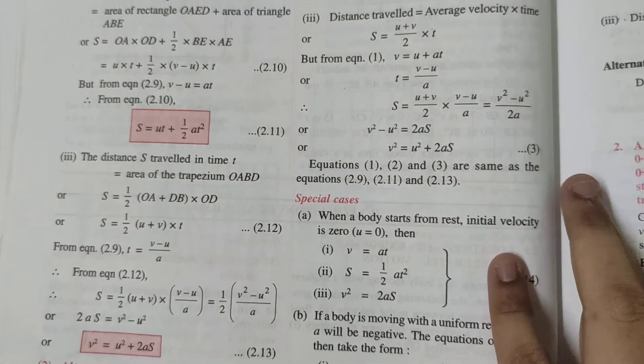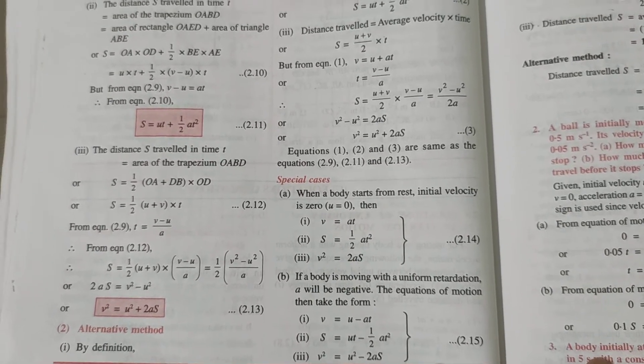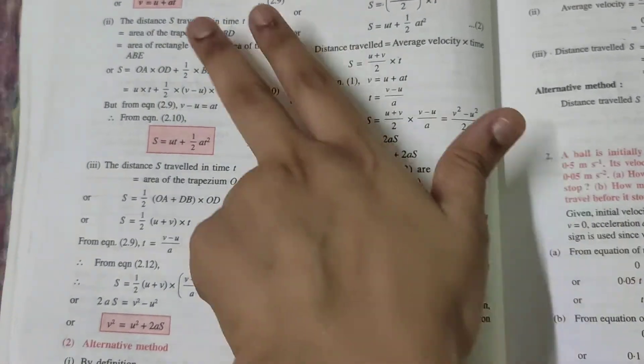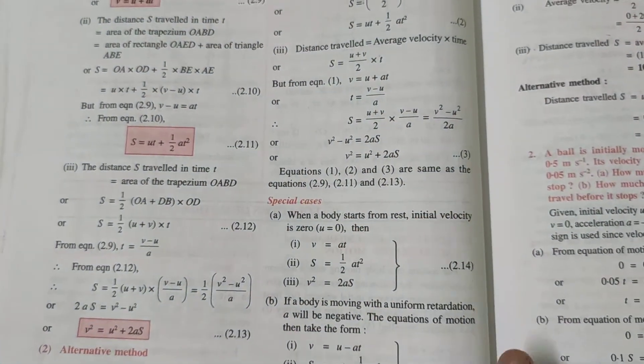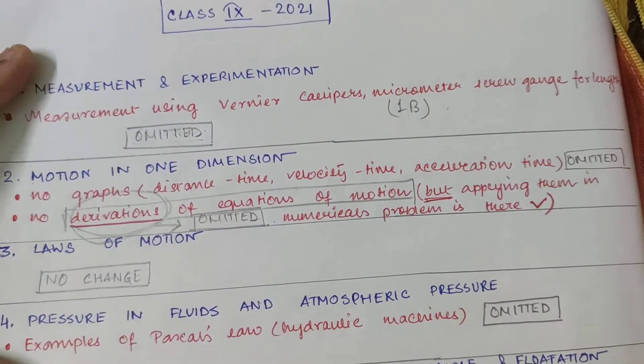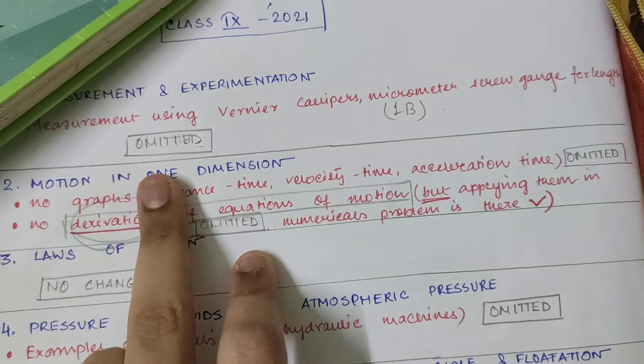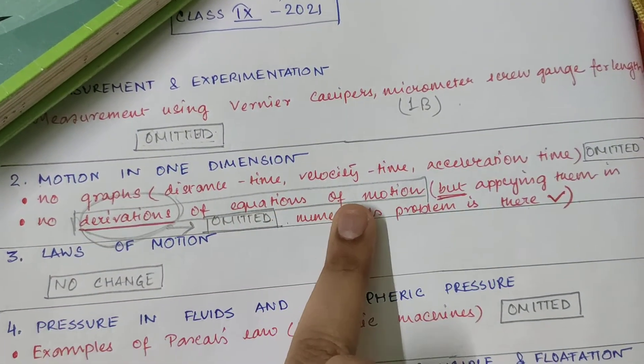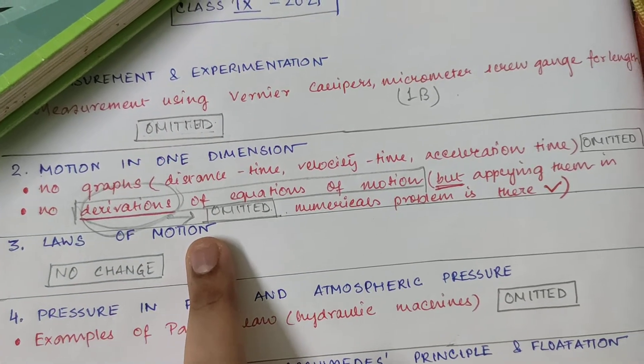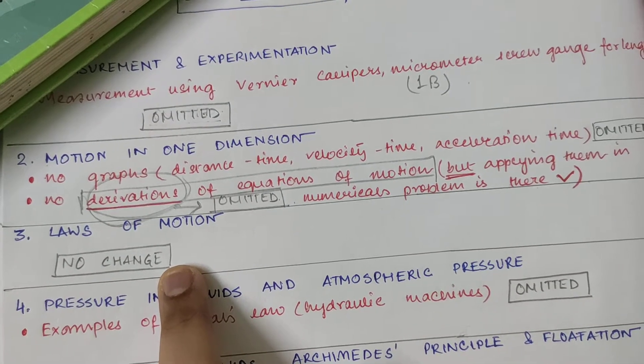And the different cases because you need applications. Just that derivation is not there. Otherwise equations are there, special cases everything is there. So understood from portion 2, motion in one dimension, no graphs and no derivations of equation of motion. Part 3, laws of motion, no change, no reduction has been made. Whatever was there initially, same.